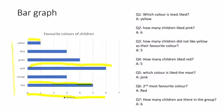The second most favorite color is red. How many children are there in the group? The total number of children is six.